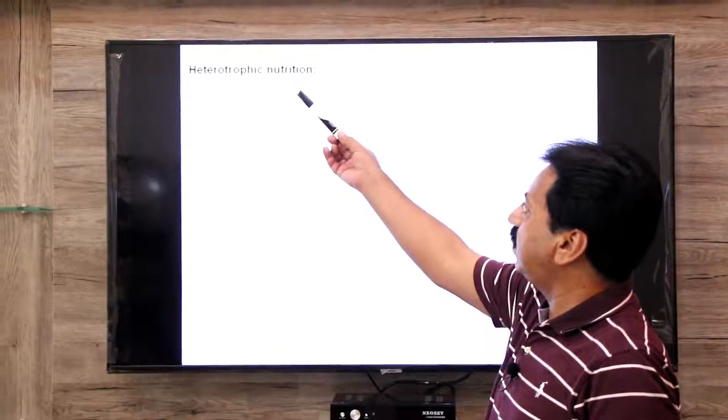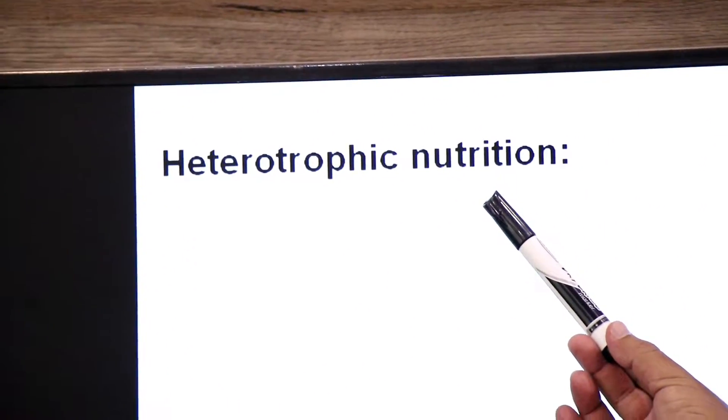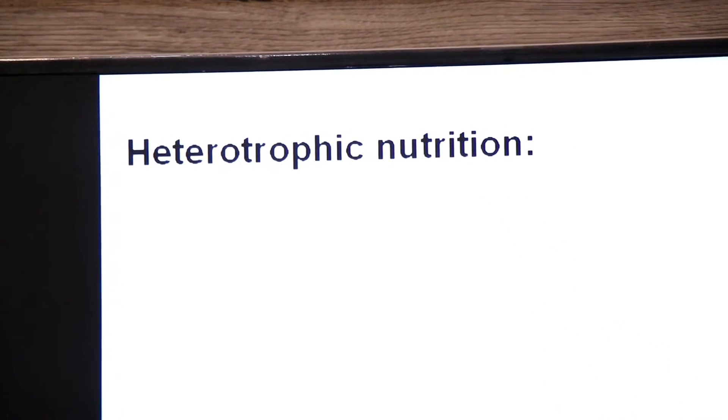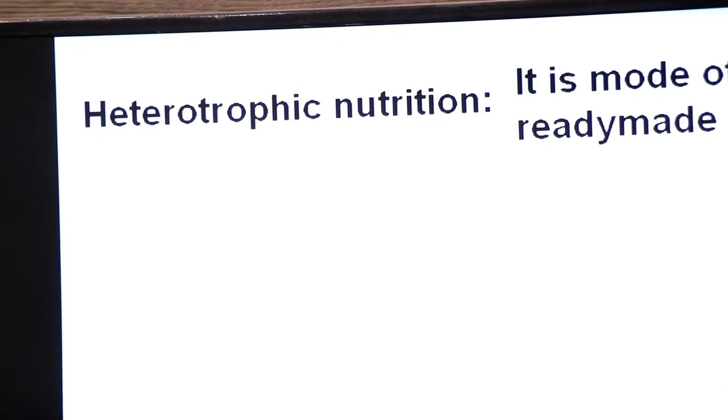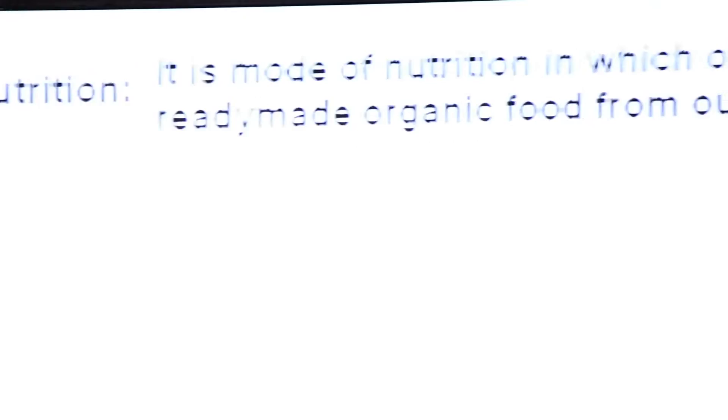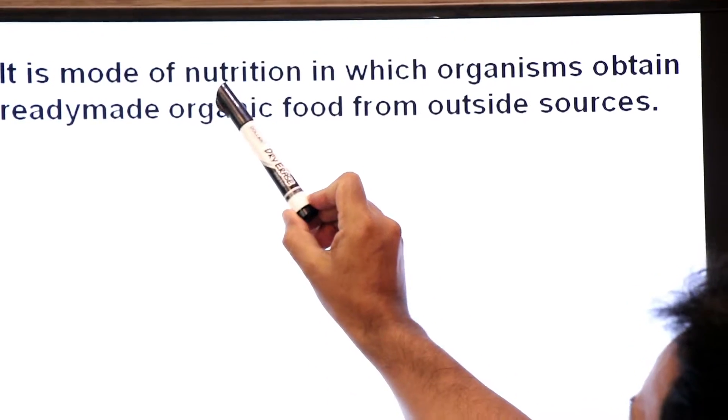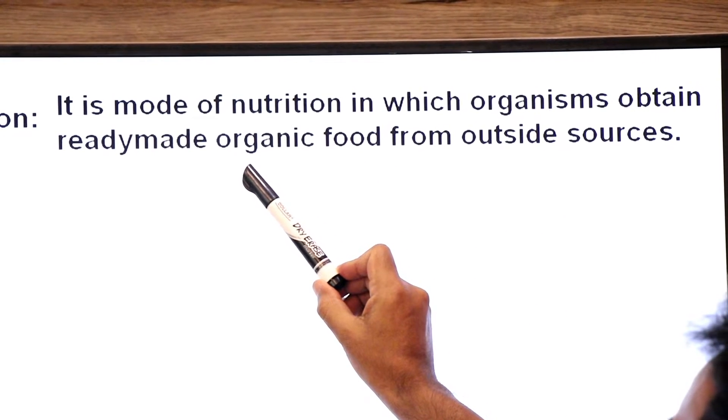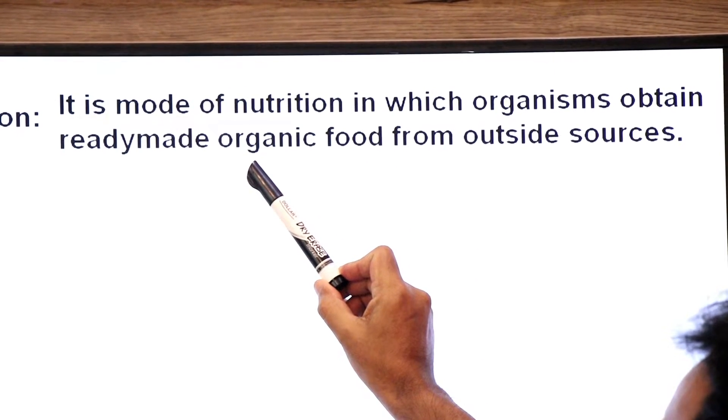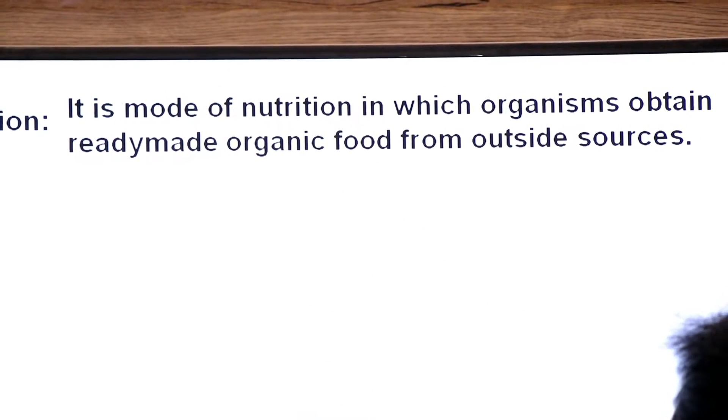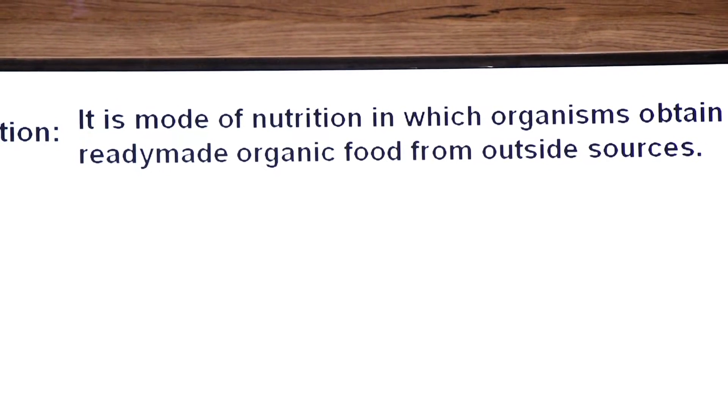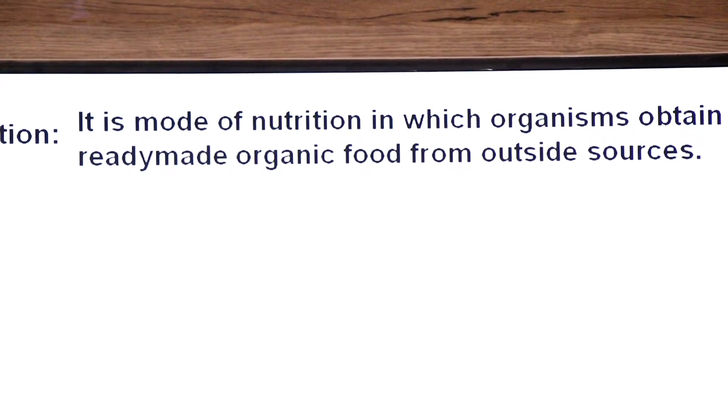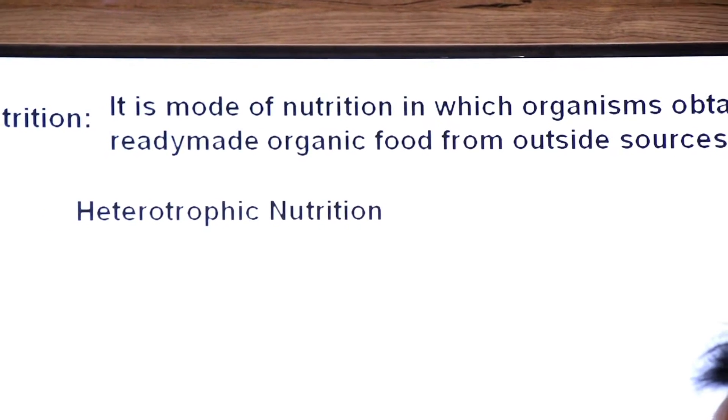Today we are going to talk about heterotrophic nutrition and types of heterotrophic nutrition. Let's first define what is heterotrophic nutrition. It is a mode of nutrition in which organisms obtain ready-made food, already prepared organic food from outside sources or from other living organisms or maybe dead organisms.